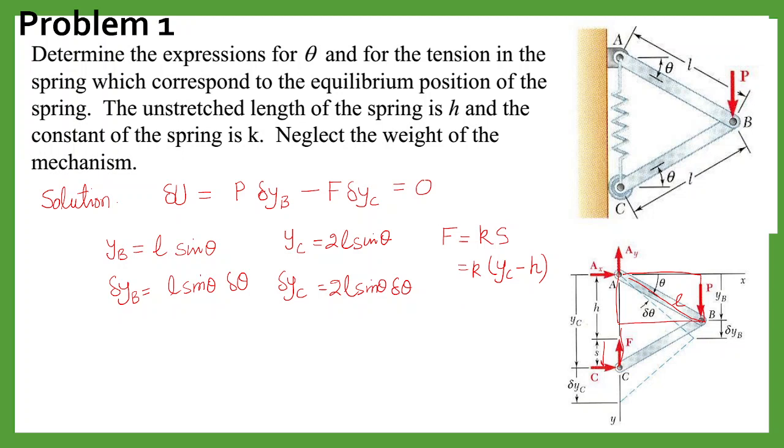S you can write as YC minus h. So K times S is K times (2L sin theta minus h). Now you can put all these delta YB, delta YC, and F in this original equation. Then we will have P L cos theta delta theta minus K times (2L sin theta minus h) times 2L cos theta delta theta, and this will be equal to 0.